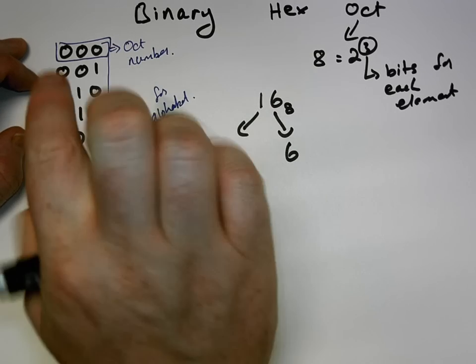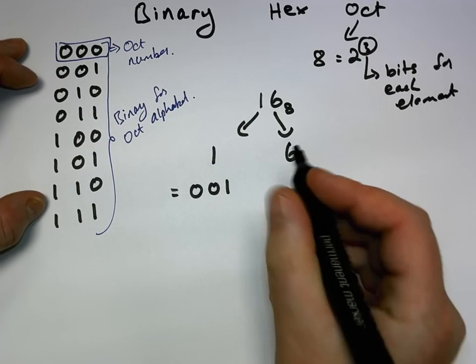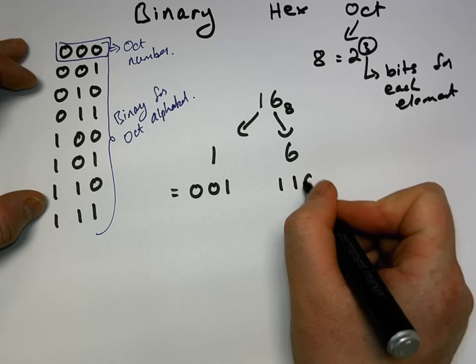For six, which is zero through six in the table, we've got one, one, zero.